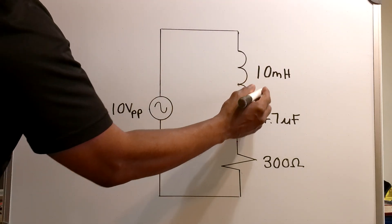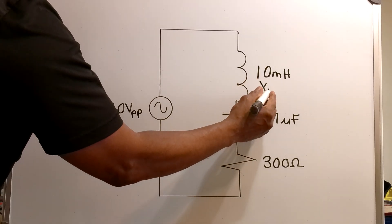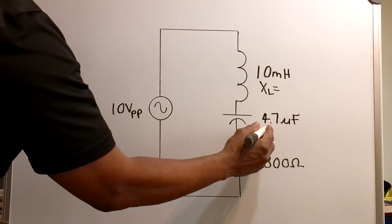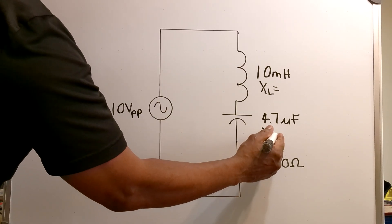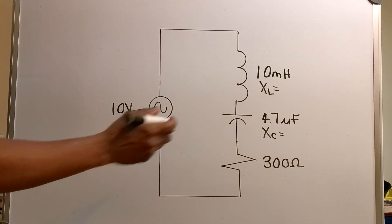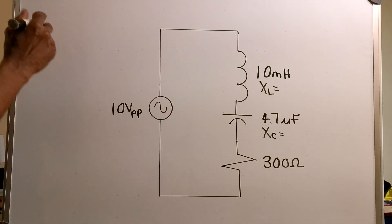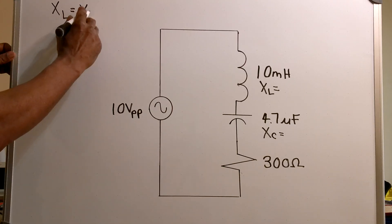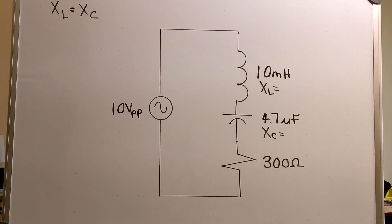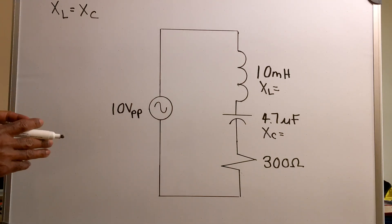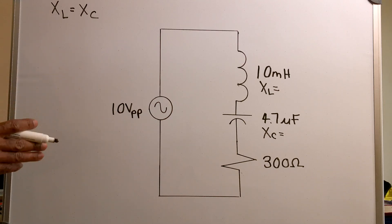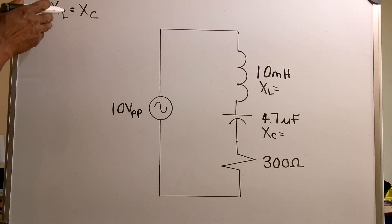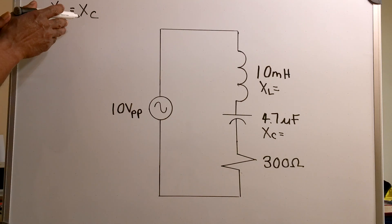Now I'm going to find my XL — my inductive reactance — and I'm also going to find my XC, which is the reactance of the capacitor. I want my XL equal to XC, so I have to find a frequency at which my inductive reactance is equal to my capacitive reactance.